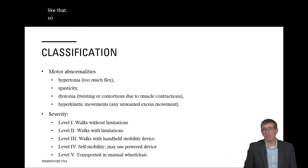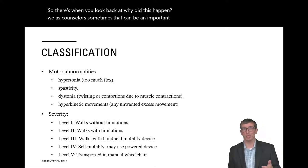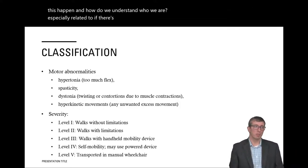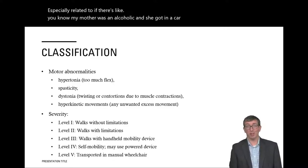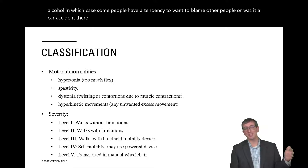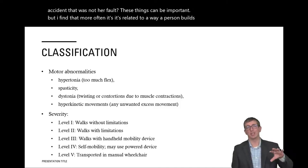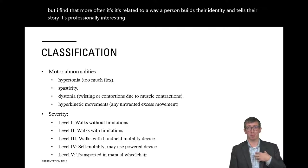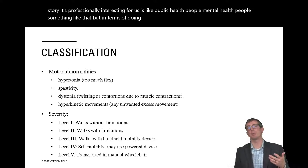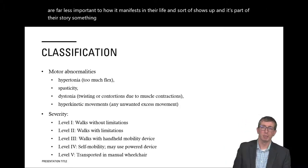As counselors, understanding why a disability occurred can be an important element of a person's story and identity. For example, if a mother was in an accident, was it due to alcohol, prompting blame, or was it not her fault? But in terms of doing counseling, the root causes of somebody's disability are far less important than how it manifests in their life and becomes part of their story — though it's still helpful to know.